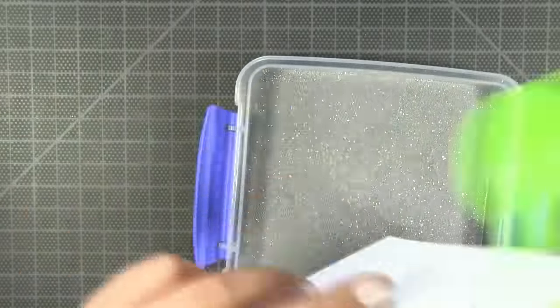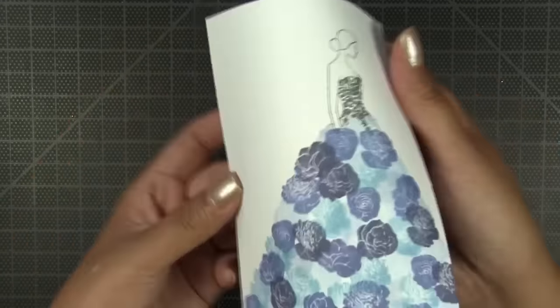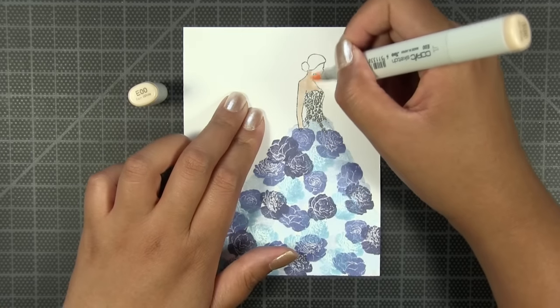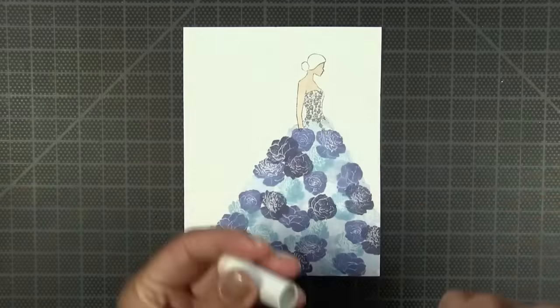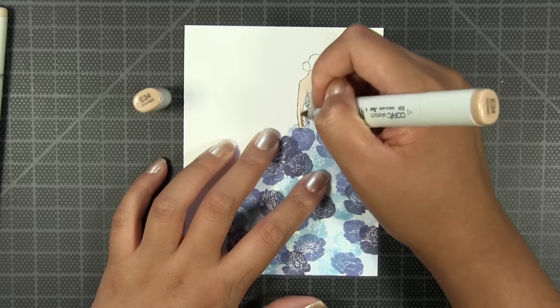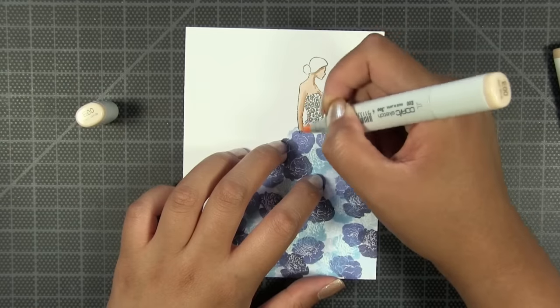After I finished embossing my image, I'm going to start coloring in the image with an E00 Copic marker first, and then I'm going to go in with a slightly darker shade. I'm using E34 to add some shade to the flesh of my stamp. After I put down the lighter color, I went in with this slightly darker shade.